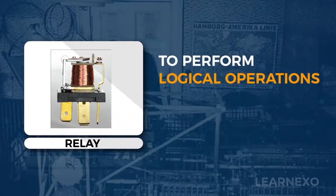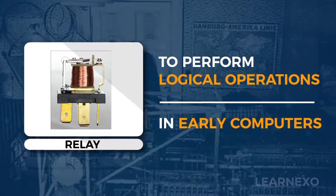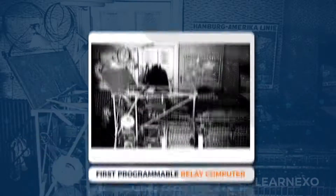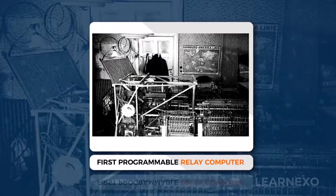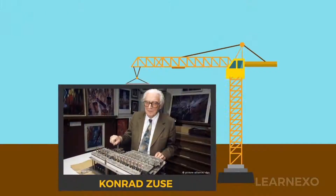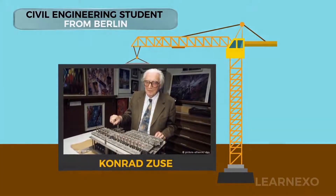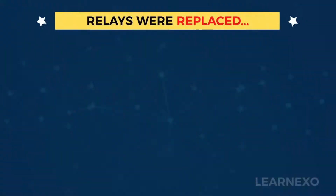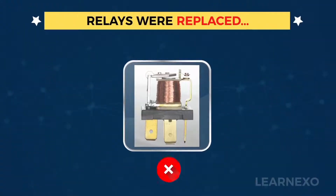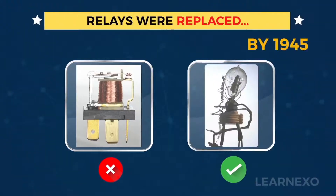Relays were used extensively to perform logical operations in early computers. The first programmable relay computer was built in 1938 by Conrad Zuse, a civil engineering student from Berlin. Dramatically, relays were replaced in computers with vacuum tubes by 1945.